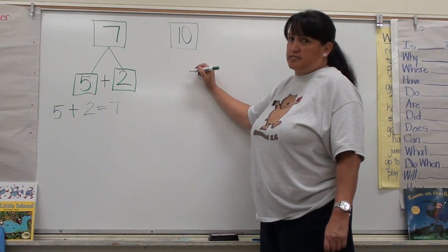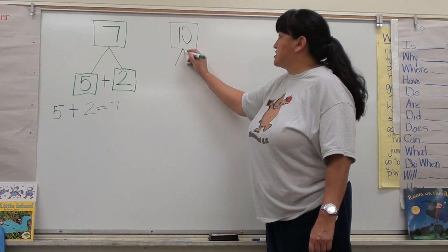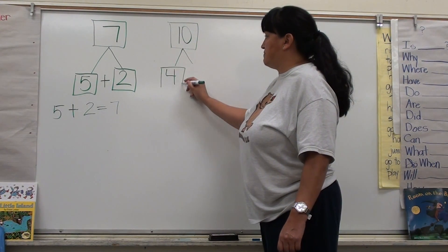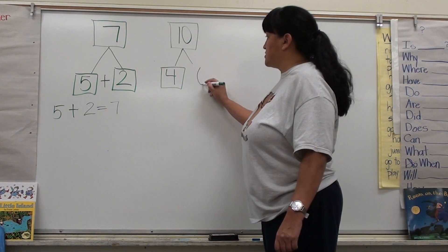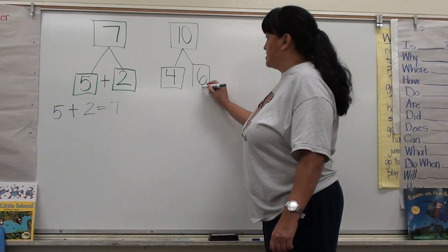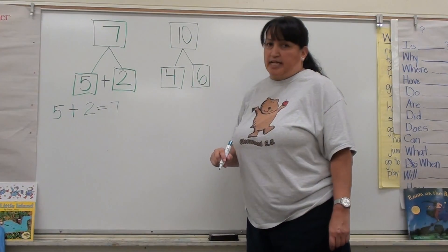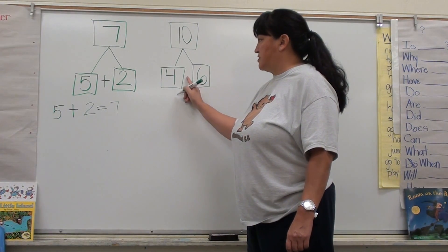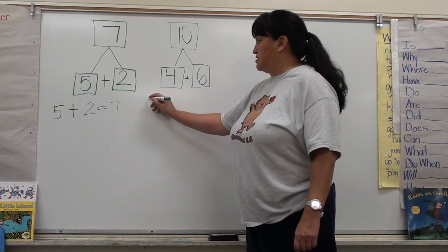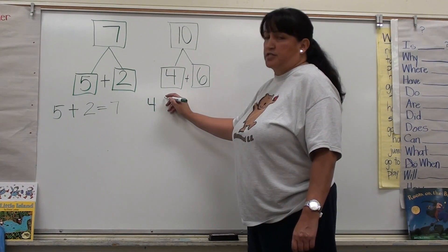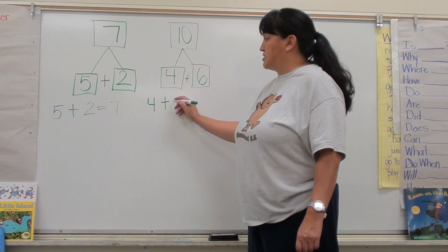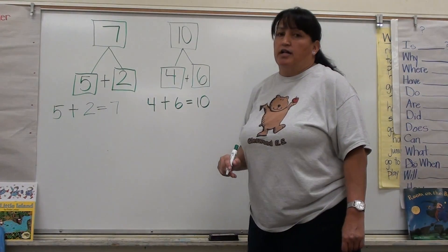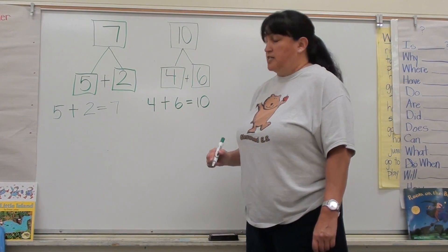Let's try another one. This time my whole number on my number bond is ten. One of my numbers is going to be four and my other number is going to be six. I can write my parts first, putting the plus on the inside and copying the numbers down for the number sentence: four plus six equals ten.